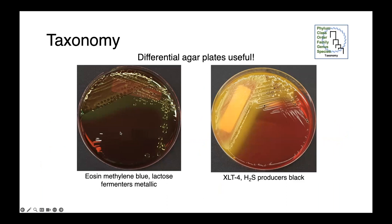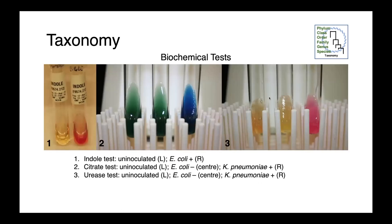Differential media can be really useful when trying to isolate and identify different Enterobacteriales. On the left here we have eosin methylene blue. On this type of media, lactose-fermenting bacteria form these sort of metallic green, liquid-metal kind of colonies. On the right we have XLT4, which differentiates those bacteria that are able to produce hydrogen sulfide. These black colonies are H2S producers, and that may be indicative of something like a Citrobacter, a Proteus, or even a Salmonella.